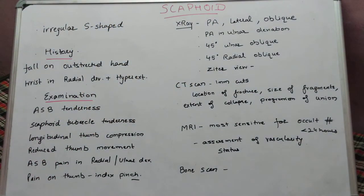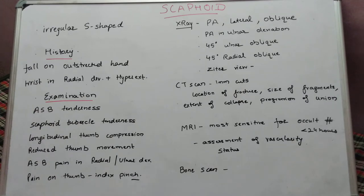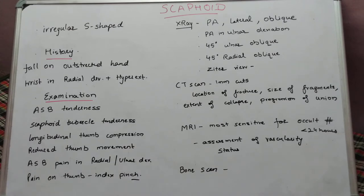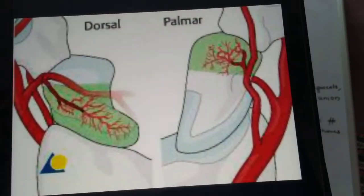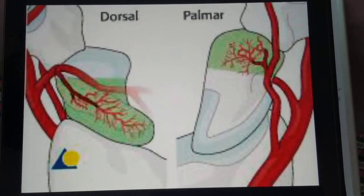When the patient presents to us in the emergency, there are three things that will lead us to the diagnosis of the scaphoid fracture. History and examination are equally important as the X-ray findings to diagnose scaphoid fractures. Before that, we will study about the vascular supply of the scaphoid bone, which is very important as this is the bone that usually goes into avascular necrosis.